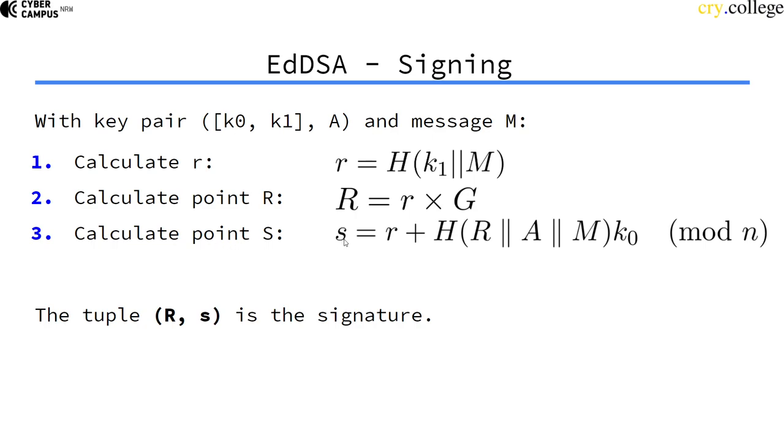S, by taking R plus the hash of R, public key A, M times K0, mod n.